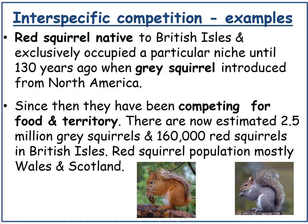An example of interspecific competition is the red and grey squirrel. Red squirrels are native to the British Isles and exclusively occupied a particular niche until about 130 years ago when the grey squirrel was introduced from North America. The grey squirrel is generally more aggressive and has a more varied diet, giving it a competitive advantage. There are now an estimated 2.5 million grey squirrels and only 160,000 red squirrels, mostly found in Wales and Scotland.